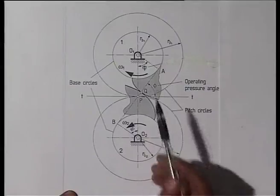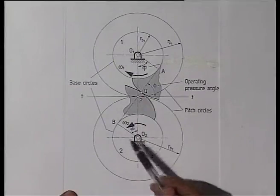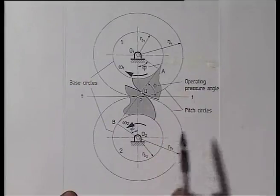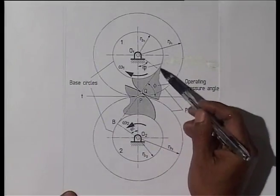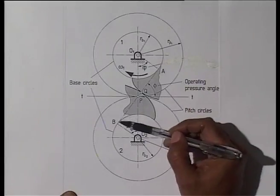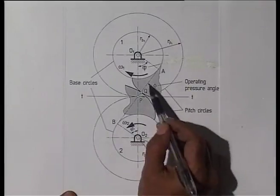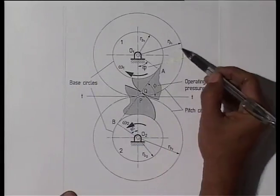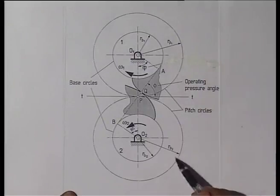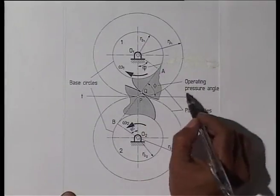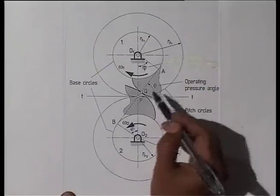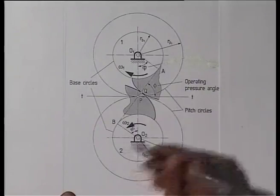Let us get back to the figure we discussed in our last class. These are the two base circles of radius R_B1 and R_B2, and the pitch circles of radius R_P1 and R_P2. The common tangent to the base circles is what we call the line of action, A-B, which makes an angle phi with the common tangent to the pitch circles. This angle phi is the operating pressure angle.